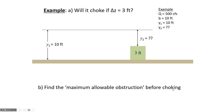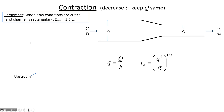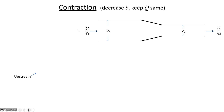Let's skip to contractions. In a top view, if the channel gets narrower, the same total flow rate Q passes through a smaller width. This means the flow per unit width, lowercase q, is larger downstream because q = Q/b, and b is smaller. Since q is larger, the critical depth is larger, and therefore the minimum specific energy is larger. The contraction shifts the specific energy diagram up and to the right.